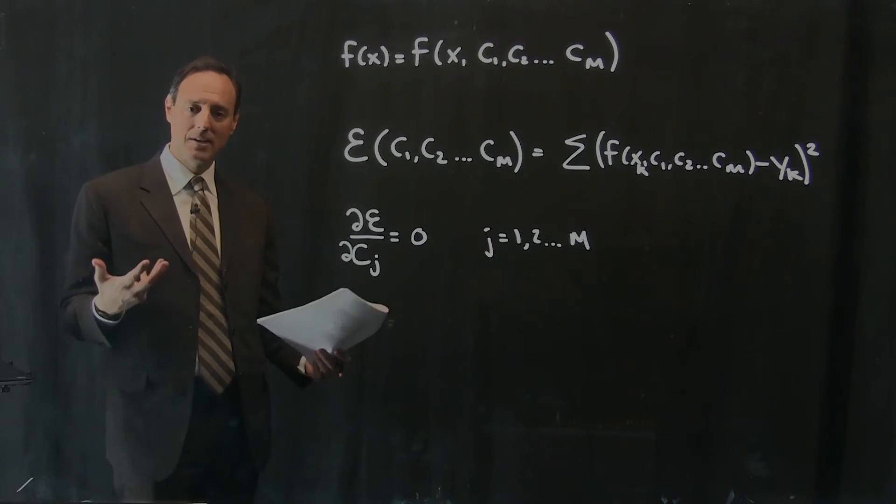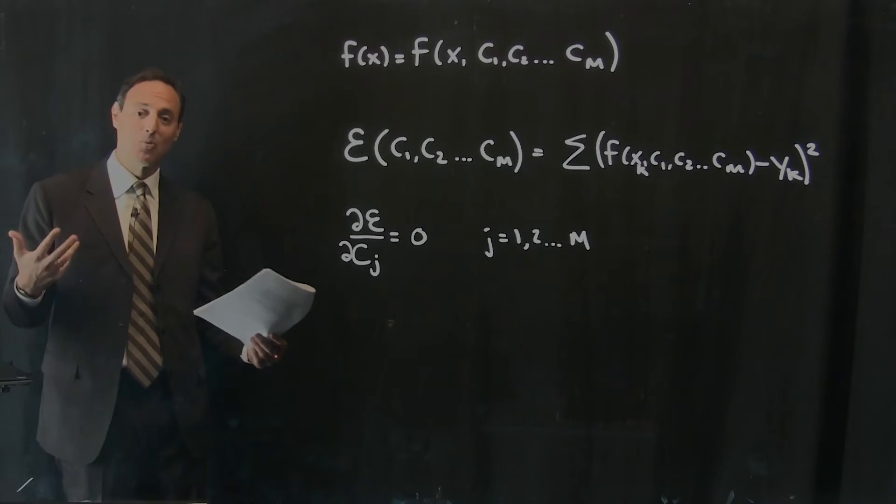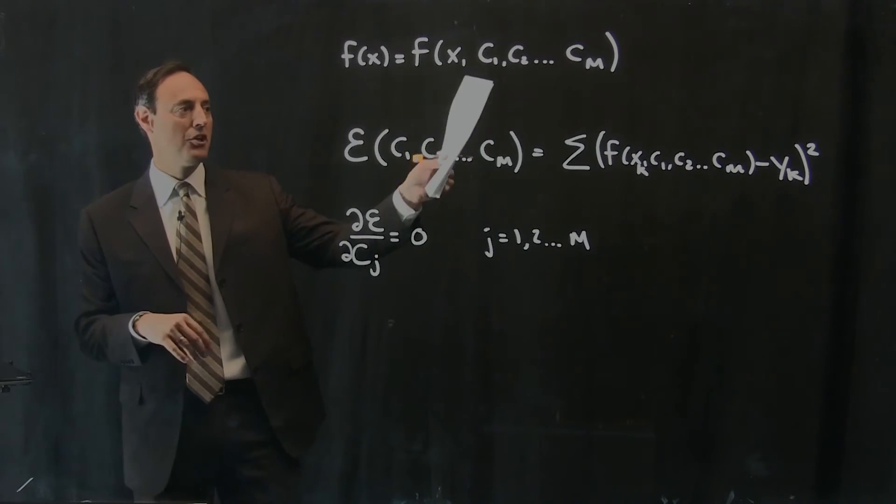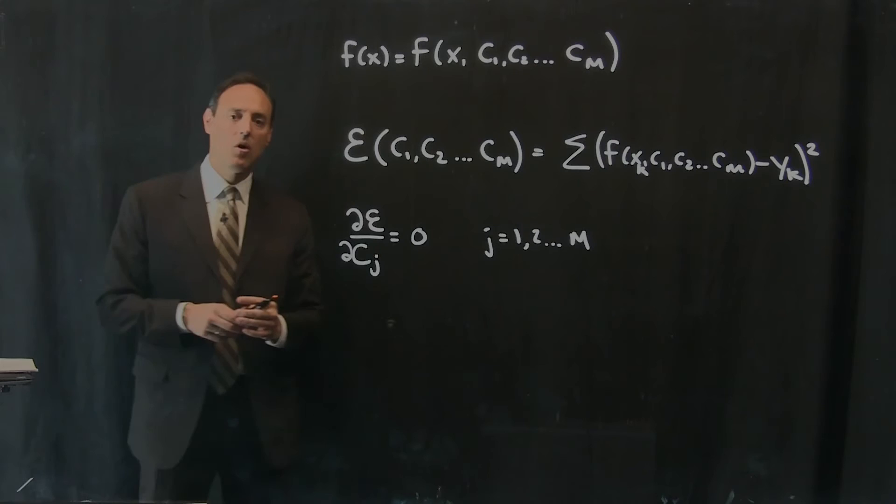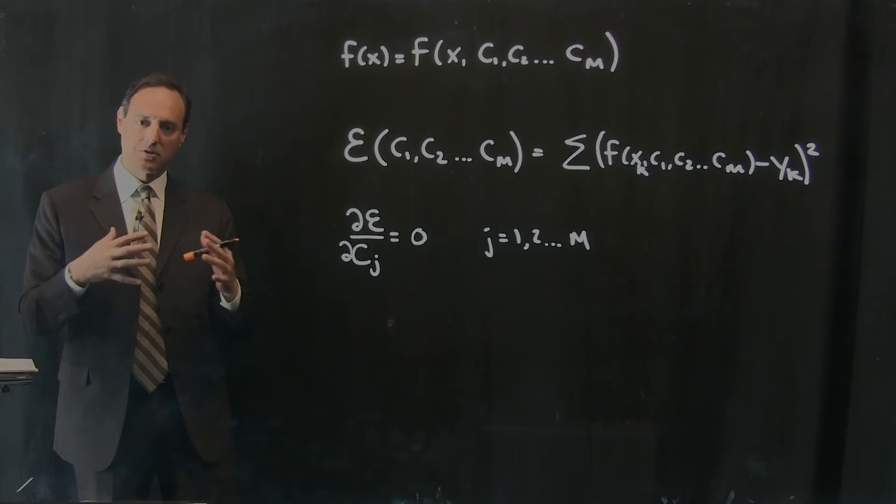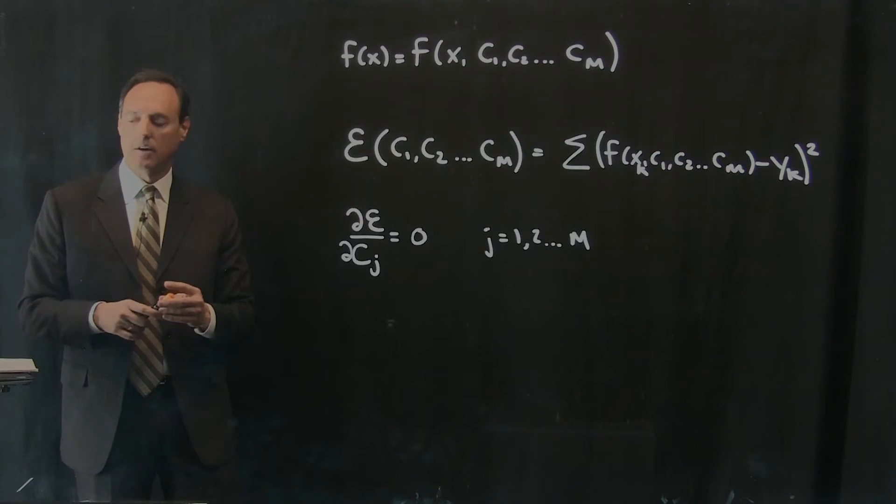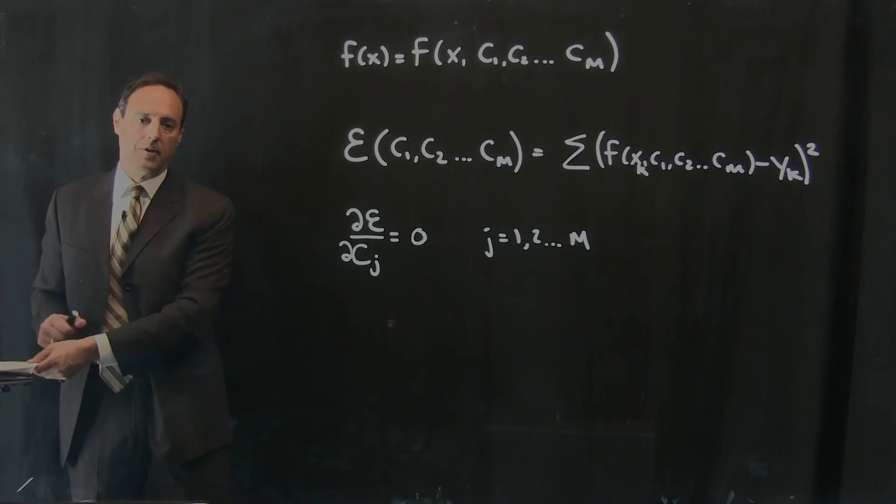But there might be many solutions that work, and some of them that are quite wrong. And so part of what you need to do in that case is be a very good guesser about what those values of C are. And if you know how to pick your C's in a reasonable manner, then you can actually write an algorithm that converges to the minimum solution.